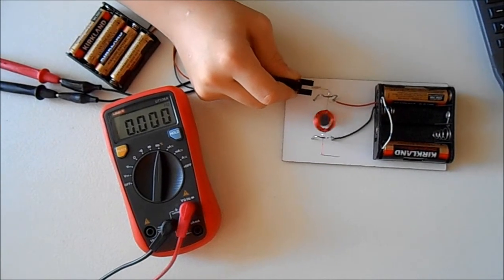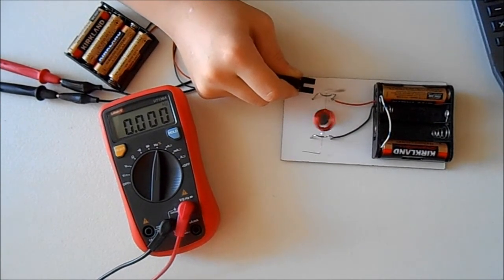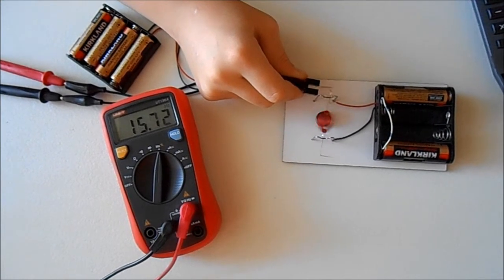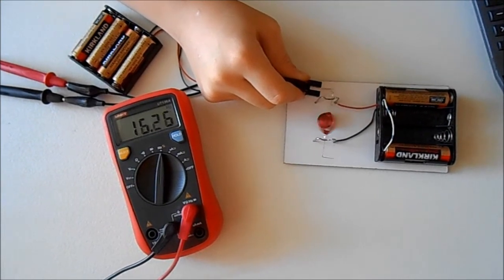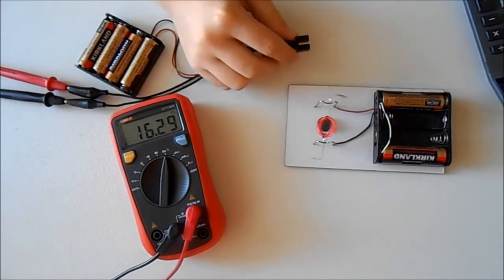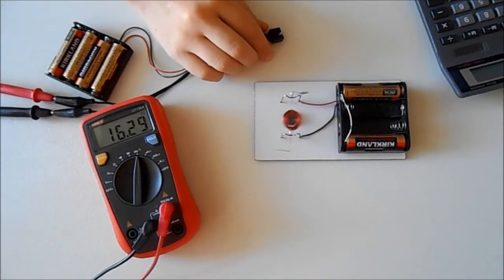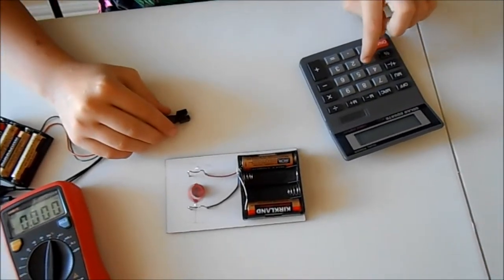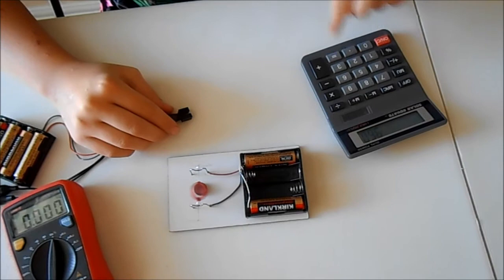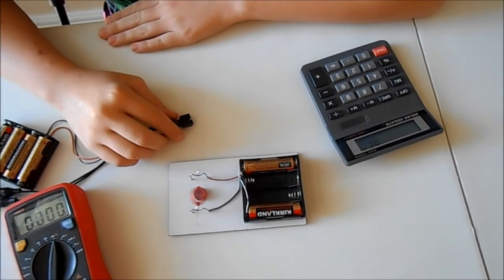Let's measure. The reading fluctuates slightly as these motors are not stable. This is normal. So the reading is about 16 hertz. We multiply 16 times 60 and get 960 which is the RPM.